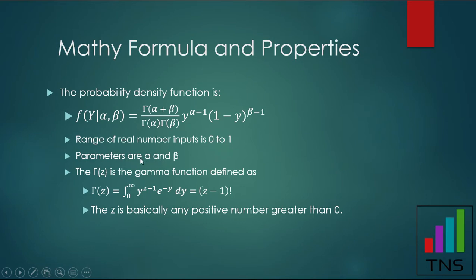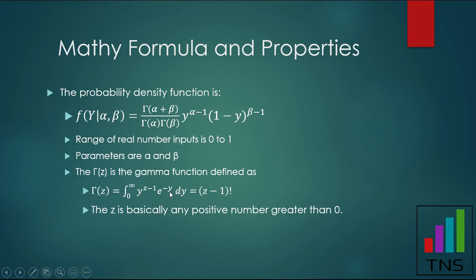The parameters for the distribution — all statistical distributions have parameters — are alpha and beta. You also have this gamma symbol, which is actually a function called the gamma function, defined by an integral. It turns out it approximates to a simpler form: if z is the input to that function, you evaluate it as z minus one factorial. This implies z is basically any positive whole number greater than zero.